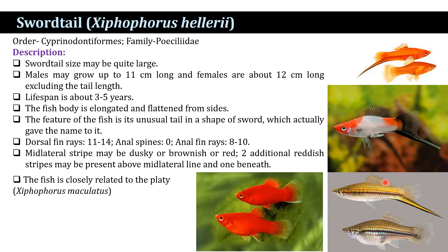The dorsal fin rays number 11 to 14. The anal fin rays number 8 to 10, and there is no anal spine. Mid-lateral stripes may be dusky, brownish, or red in color. Two additional red stripes may be present above the mid-lateral line and one below.